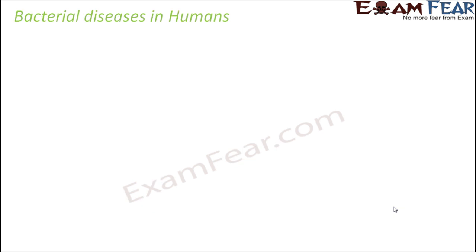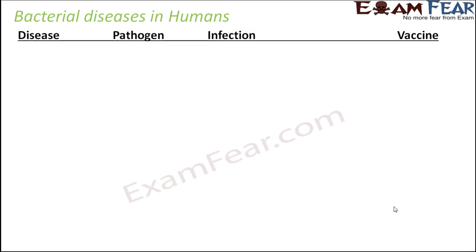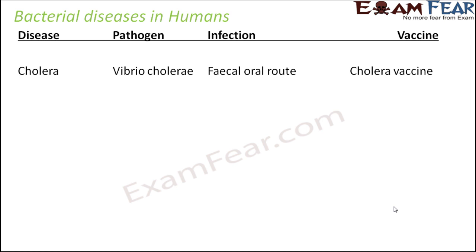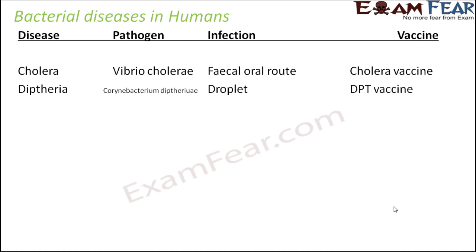Now let us look at bacterial diseases in humans. Cholera is caused by the bacteria Vibrio cholerae, and infection spreads through the fecal-oral route — the infection in feces gets transmitted to food through vectors such as insects. A cholera vaccine is available. Diphtheria is caused by Corynebacterium diphtheriae, spreads through droplet infection, and the vaccine available is the DPT vaccine, which stands for Diphtheria, Pertussis, and Tetanus.